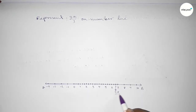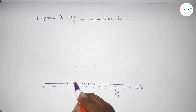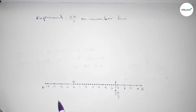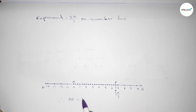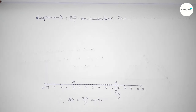So this is 20 over 3 on the number line. Taking O and P, therefore OP equals 20 over 3 units. That's all. Thanks for watching — please share it with your friends.